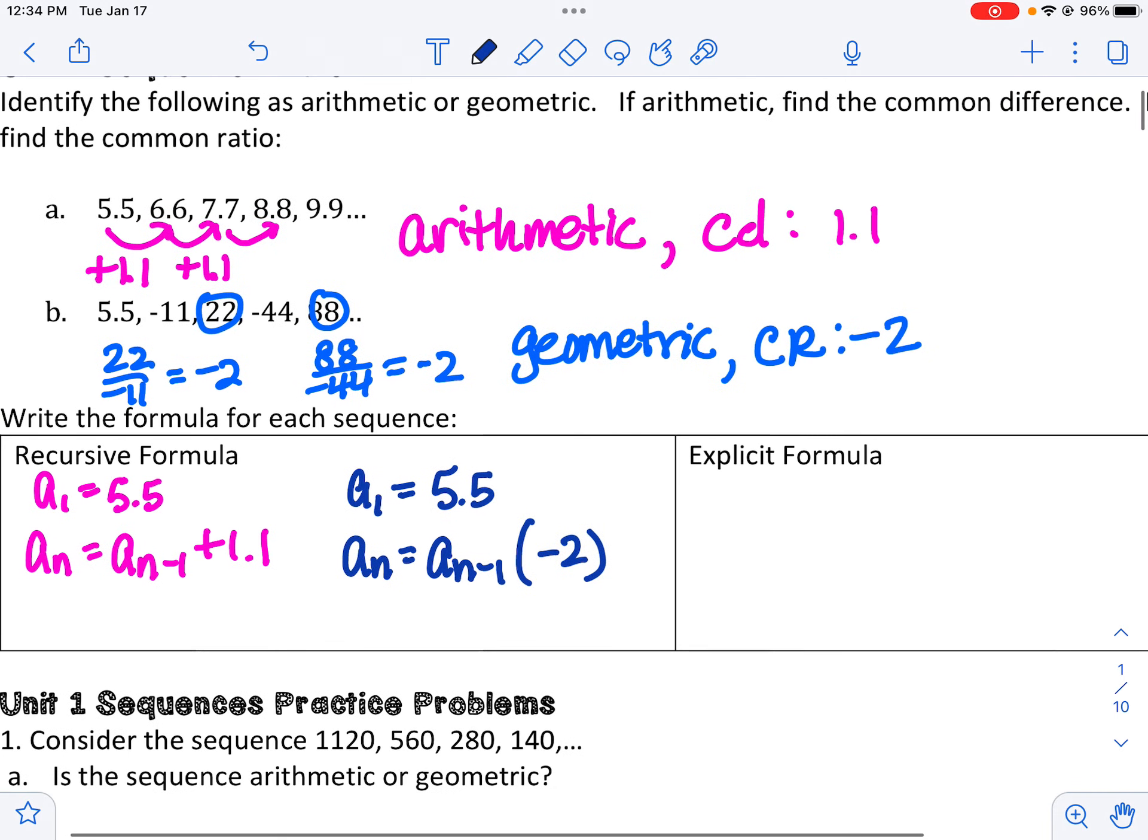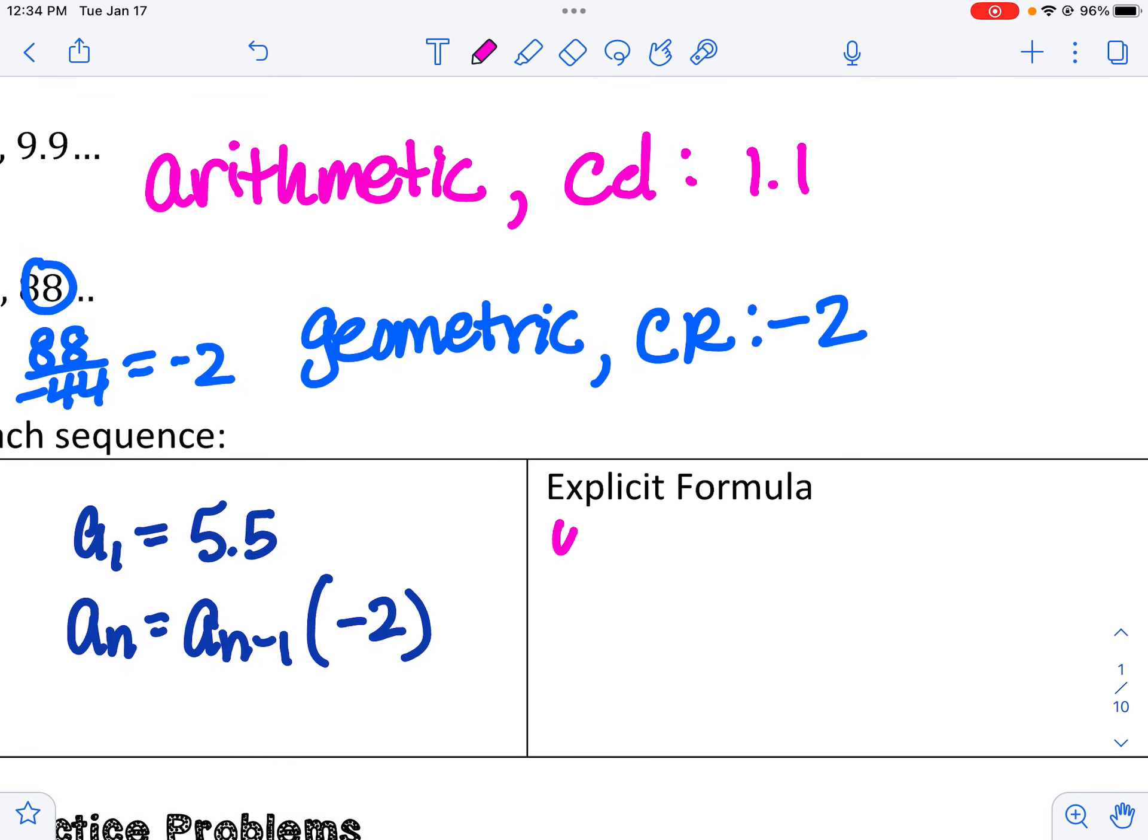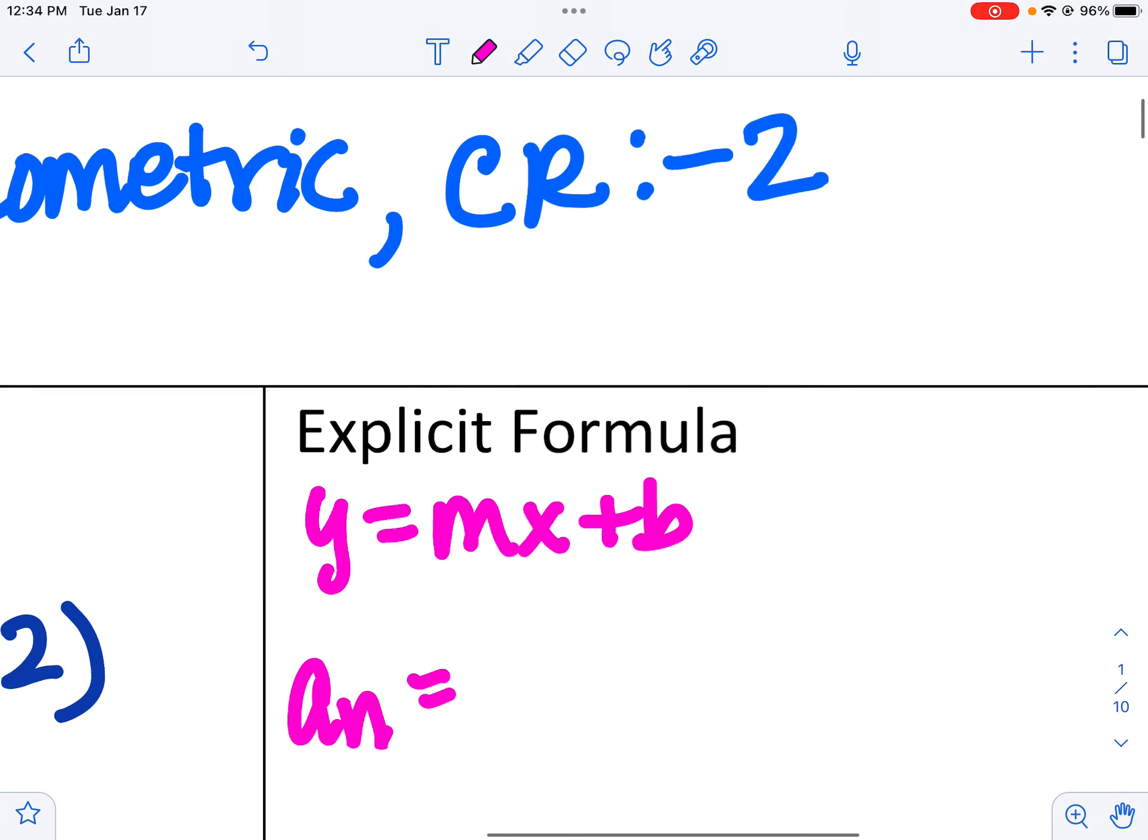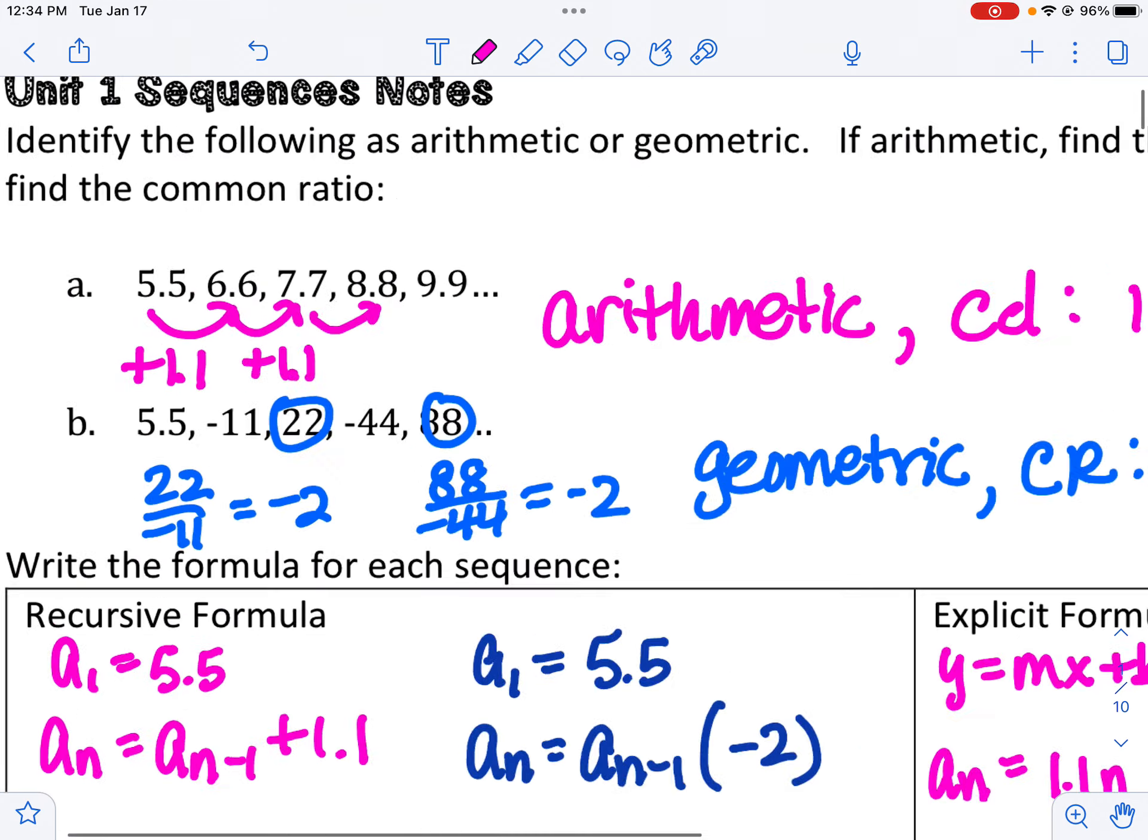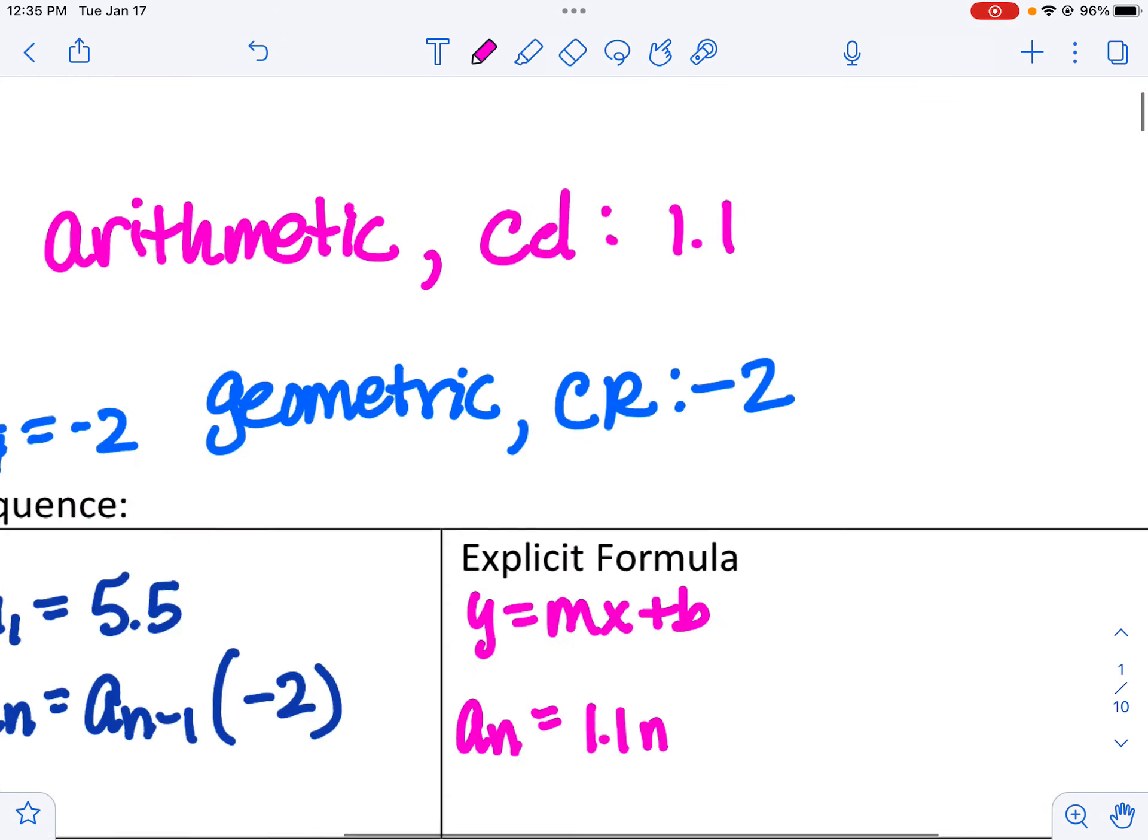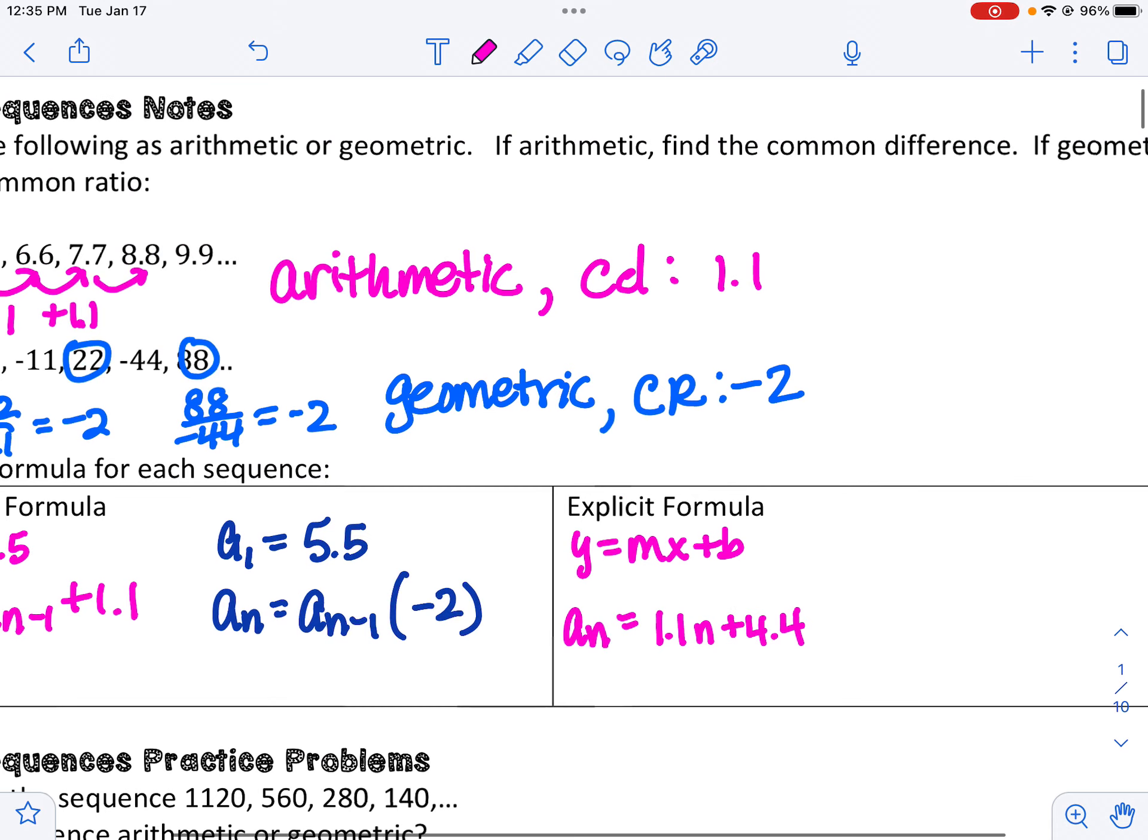And then the explicit formula is what's a formula we can just plug into and find the next term. So y equals mx plus b. So we'd say to find any term, the slope here is 1.1. And then we would need the y-intercept. So here the y-intercept, you'd have to go backwards one and find the zero term. And so here it'd be 4.4.